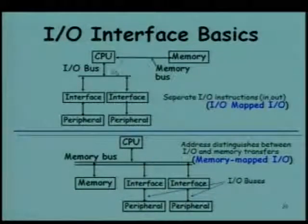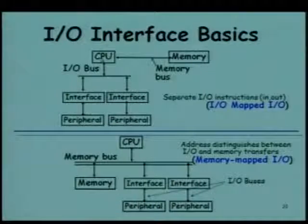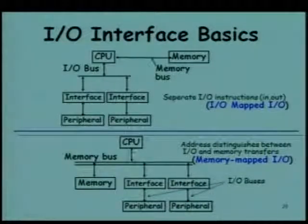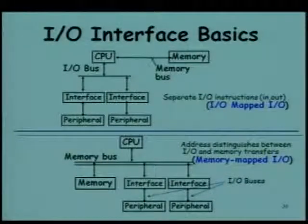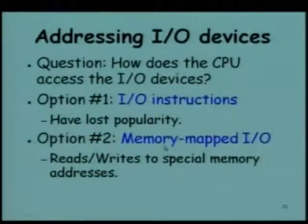In this arrangement we have a memory bus and I/O bus separately. There is I/O-mapped I/O, which means there are separate I/O instructions (in/out) on the CPU, and based on that it outputs to the memory or to the I/O bus. This is archaic and no longer used. The one that is used is memory-mapped I/O, where peripheral devices are connected and act as if they are memory addresses.